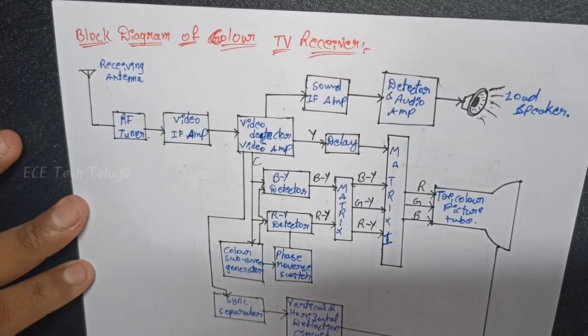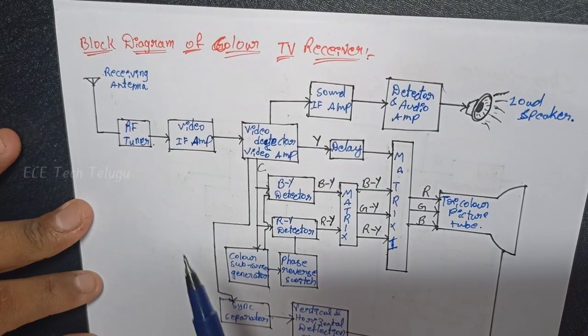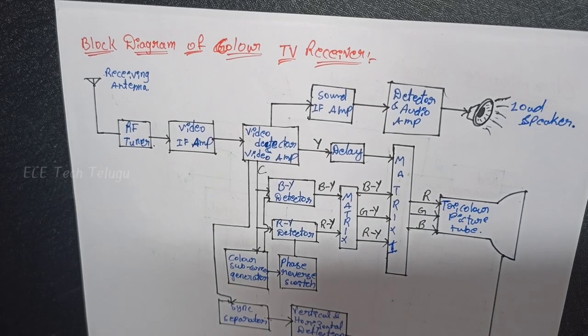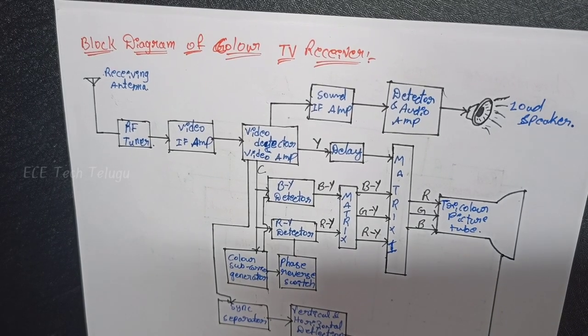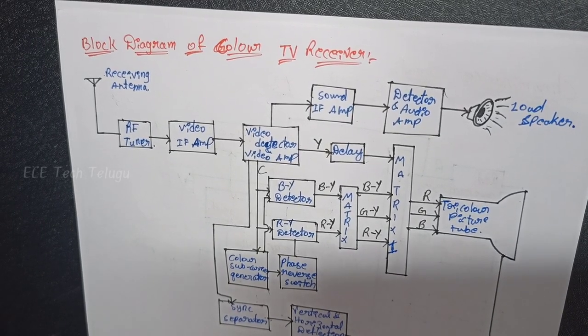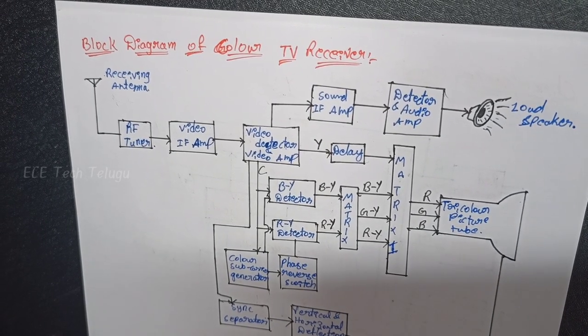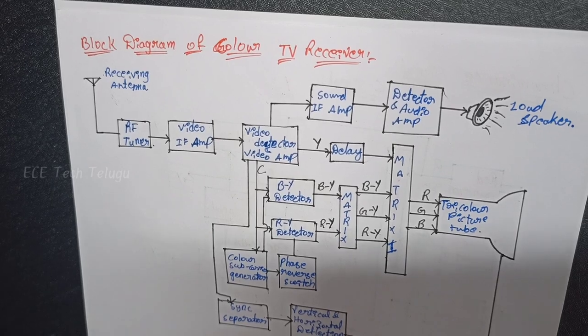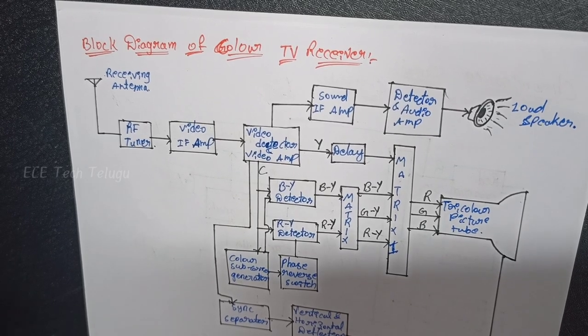Next is the receiver section. The receiver transmission section will be the mirror of the transmitter section. If you have understood the transmitter section, the receiver section will be easy — it is almost the same but done as a reverse process.